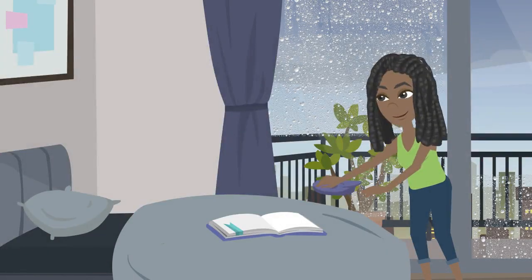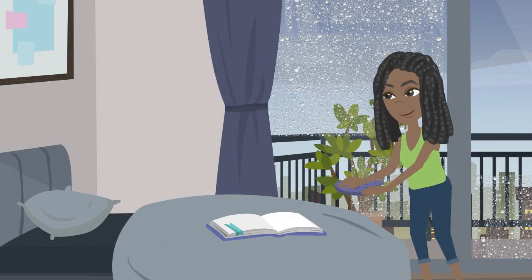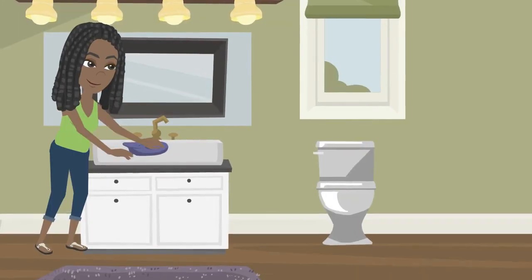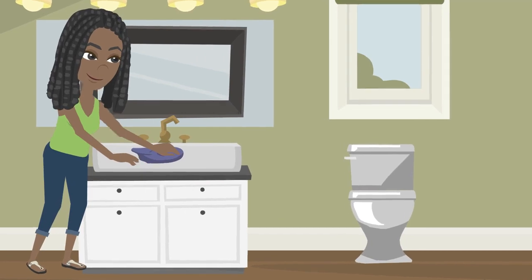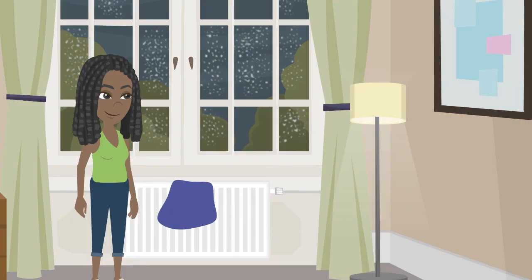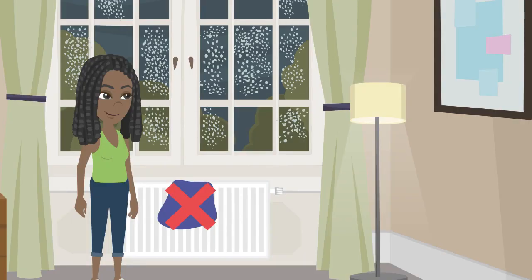If you use a cloth to remove condensation off the windows in the morning, remember to wring it out in a sink rather than dry it on a radiator, where the moisture will evaporate into the room again.